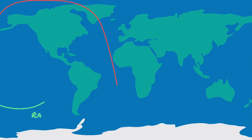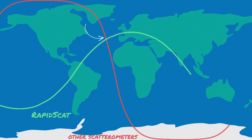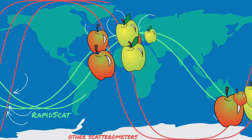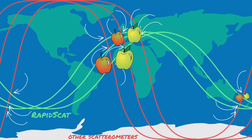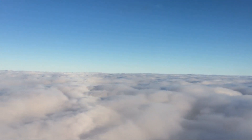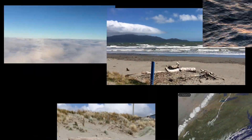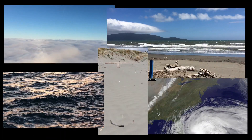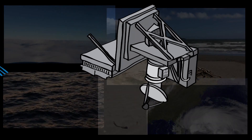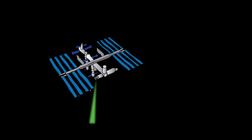Even better, RapidScat's path will cross those of the other scatterometers, allowing for careful calibration of all of the instruments, so we know we're comparing apples to apples when we put it all together. There's still a lot we don't know about our planet, not least of which is what's going on in the atmosphere. But wherever the wind blows, RapidScat will soon be keeping a watchful eye out for all of us.